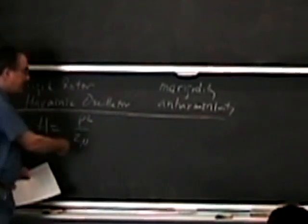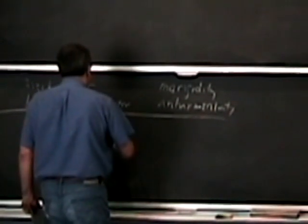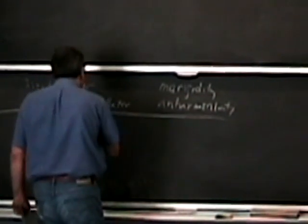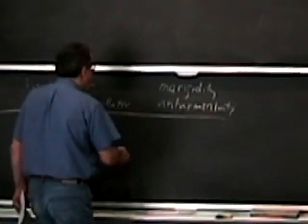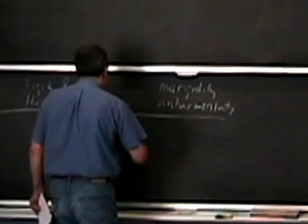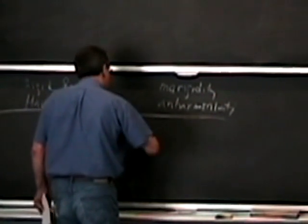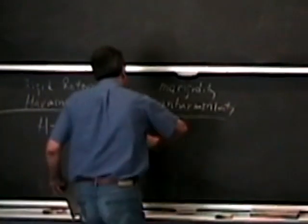The Hamiltonian for a harmonic oscillator: we have p² over 2μ — the reduced mass — that's the kinetic energy term. And the potential energy term is one-half k q².